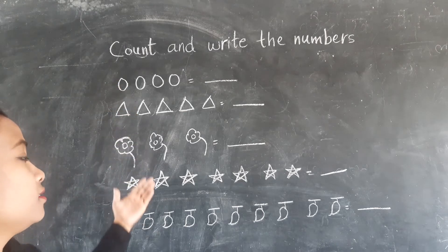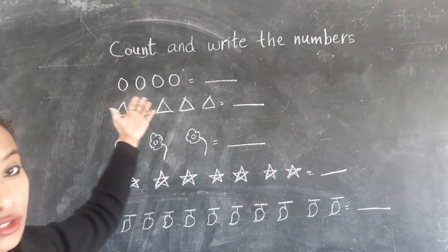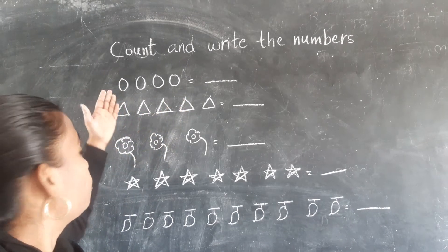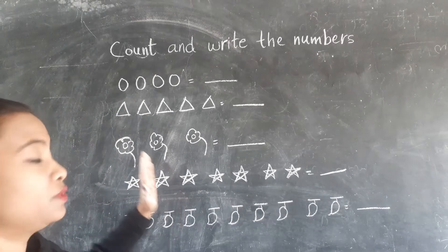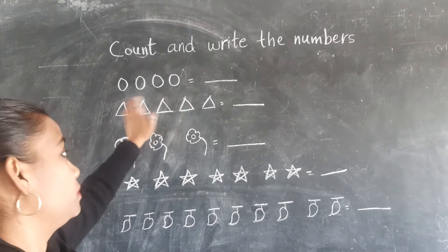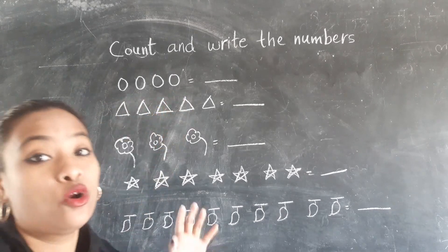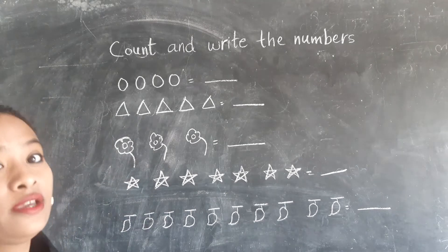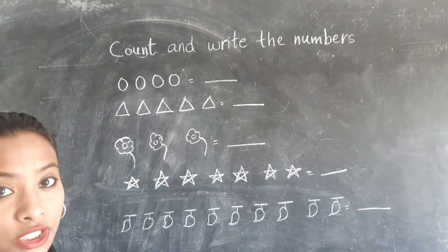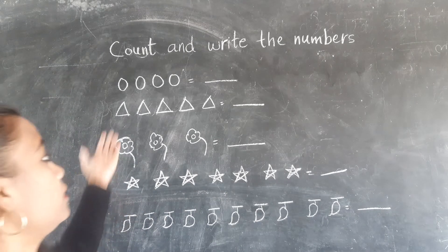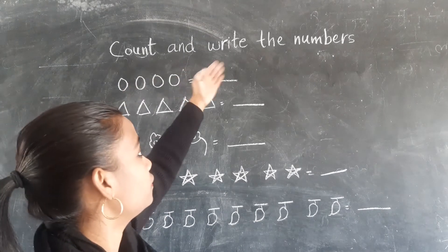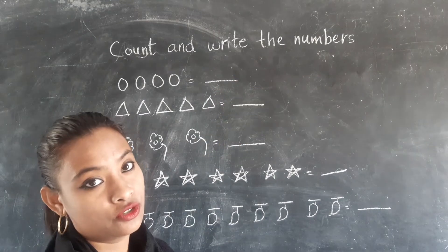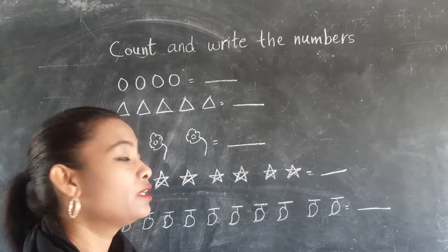So as you can see here, there are pictures. So what you have to do is you have to count the pictures, how many are there. And after counting, what you have to do is you have to write the answer over here on the blank space. So let's begin.